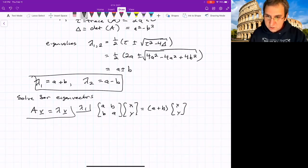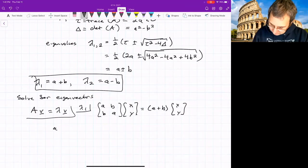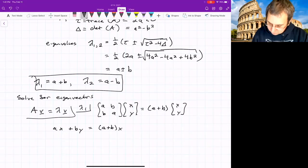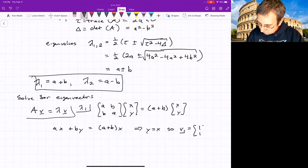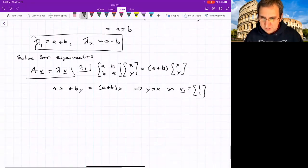For the first one, it's A, X plus B, Y equals A plus B, X. And what does that give us? Y equals X. So V1 is just 1, 1. An eigenvector is just a direction. It's not a magnitude. We haven't normalized it or anything. And we could find the other direction.